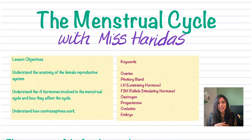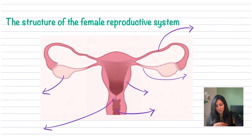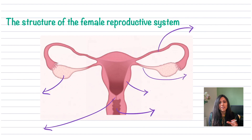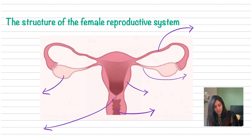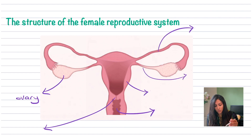So the anatomy of the female reproductive system — we really need to understand the different parts in order to see how they affect the menstrual cycle. Starting on the left hand side, you've got your ovary. You have two ovaries, one on each side. In that ovary you will usually find the egg.